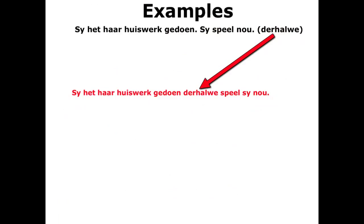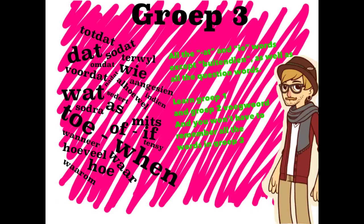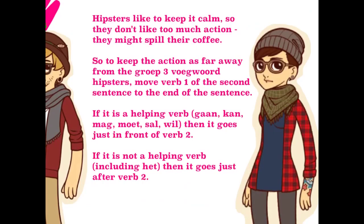Let's look at Groep 3. Groep 3 has all of the words that end in 'at' and all of the words that have 'ie' in them, except buitendien, which is a Groep 2 word. Groep 3 also contains all of the question words like waarom, hoe, waar, hoeveel, wanneer, wat, and so on. But if you learn the Groep 1 and Groep 2 voegwoorde, then you won't have to remember which conjunctions are in Groep 3. I like to think of Groep 3 as hipsters — they like to keep things really calm. They don't like too much action.